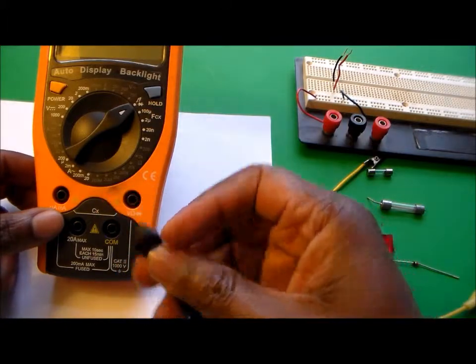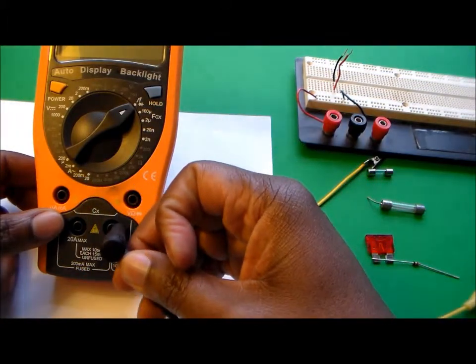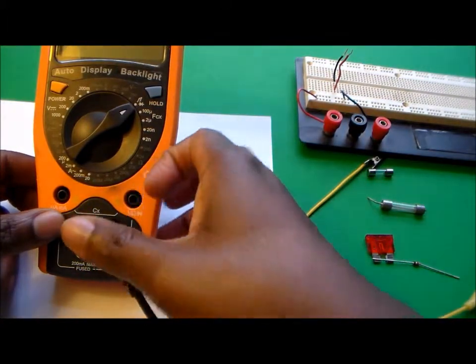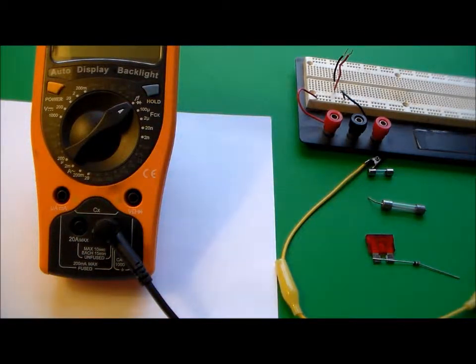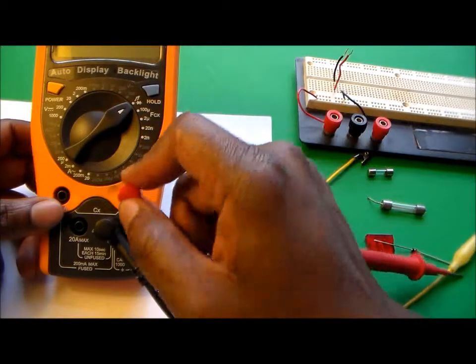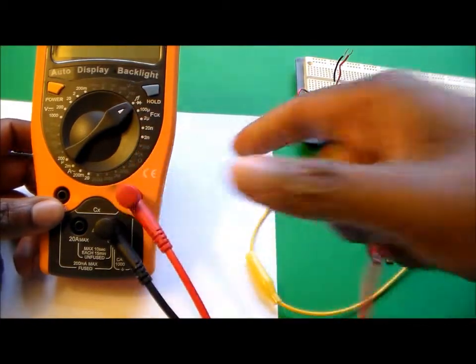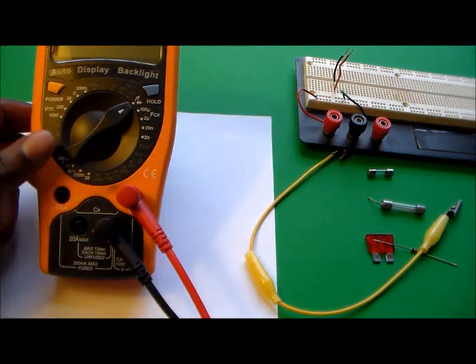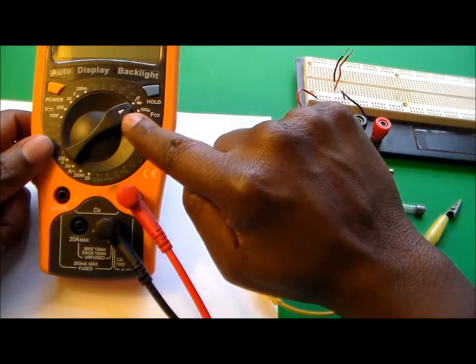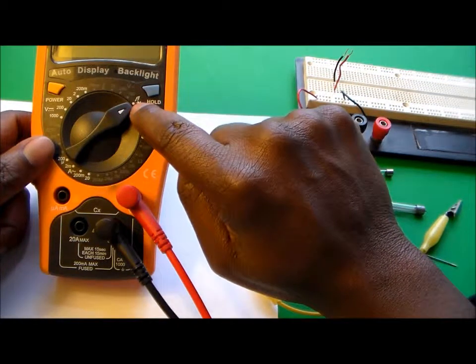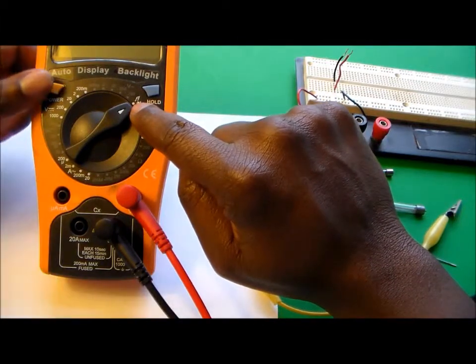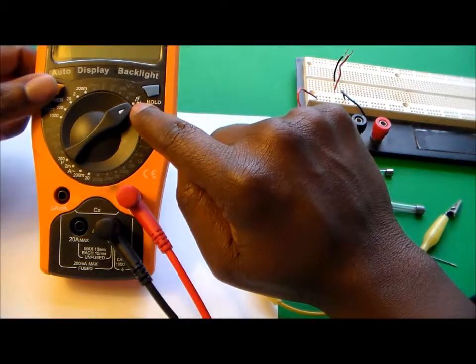Let's connect our black wire or test lead into the common and we're going to connect the red wire or red lead into the diode slash continuity tester. Make sure that the dial is turned towards the diode slash continuity tester on your device in order to begin testing.